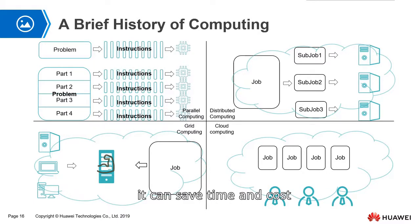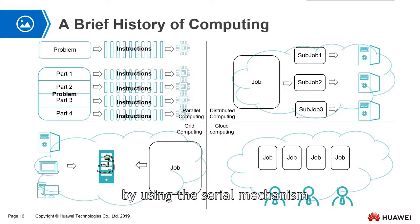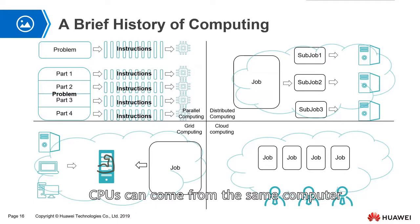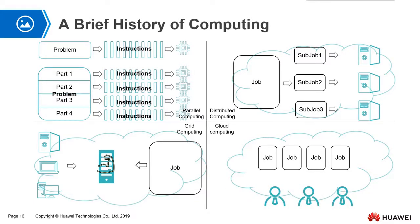First, it can save time and cost. Secondly, it can solve problems that cannot be solved using a serial mechanism. Parallel computing CPUs can come from the same computer or from different computers in the same network.